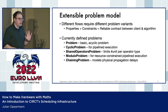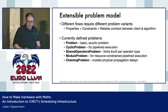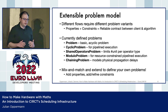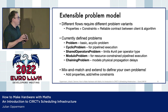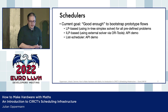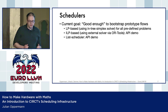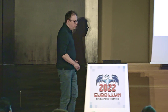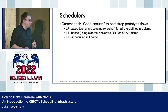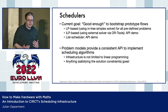In the infrastructure we currently have five problems defined, including the cyclic problem and simple resource-constrained scheduling problems. The idea is that you don't stop at these predefined problems — you can mix and match problem definitions to define your own problems by adding properties or refining constraints. In terms of schedulers, our current goal is to be just good enough to bootstrap prototype flows. We have an entry simplex solver for the five problems, and API demos to use an ILP solver and list scheduler. While my personal background is in linear programming, the infrastructure is not fixed to that — anything that computes solution properties satisfying the solution constraints is fine.